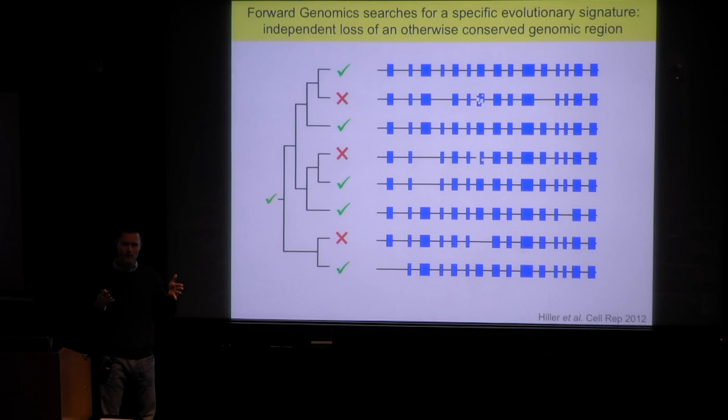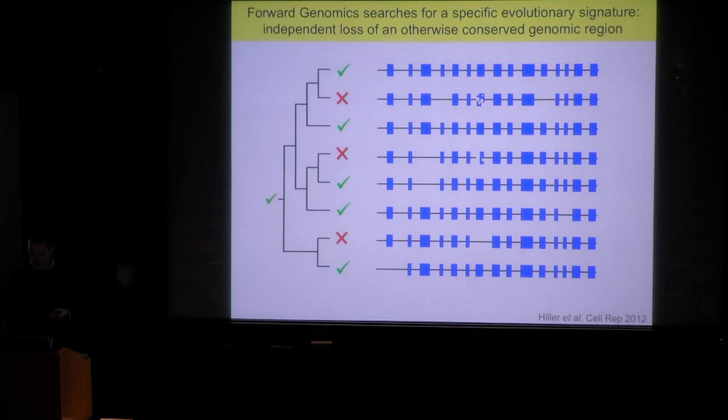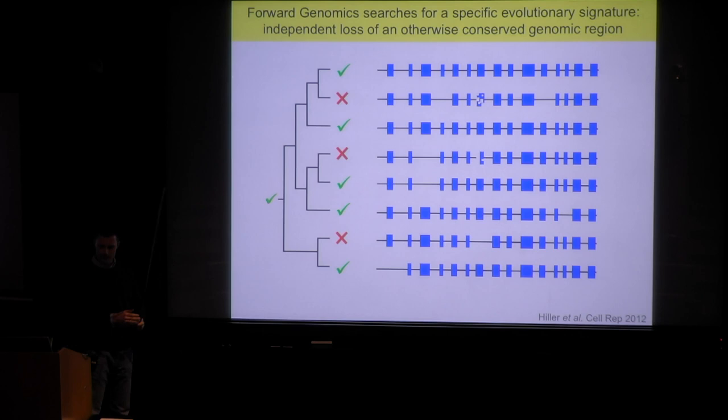To link phenotypic differences and genomic differences, we developed — actually as a postdoc — this so-called forward genomics framework. This general approach focuses on phenotypes that were present in the ancestor and then got changed or lost in independent lineages.